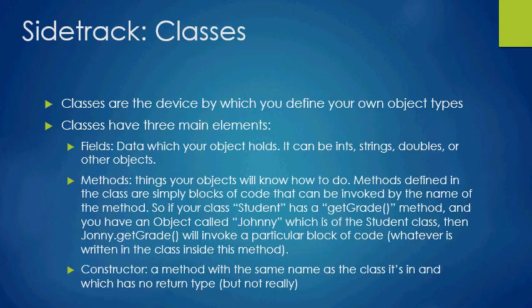Methods are the complex operations that your class — and therefore your objects — will be able to do. Methods are defined in the class and are simply blocks of code that can be invoked by the name of the method. So if your class Student has a getGrade method and you have an object called Johnny of the Student type, then Johnny.getGrade() will invoke that particular block of code. Methods are bits of code set aside within a class that each object that's a member of that class will be able to invoke to do a certain job.